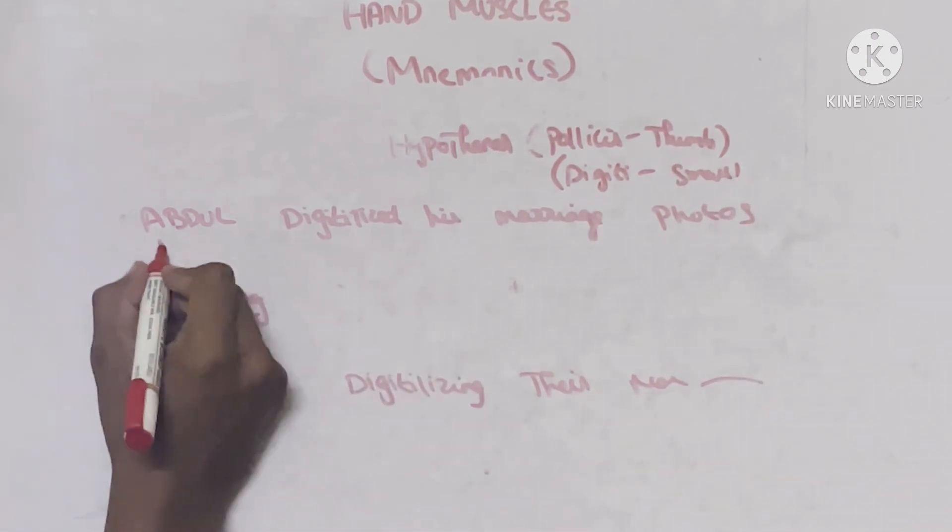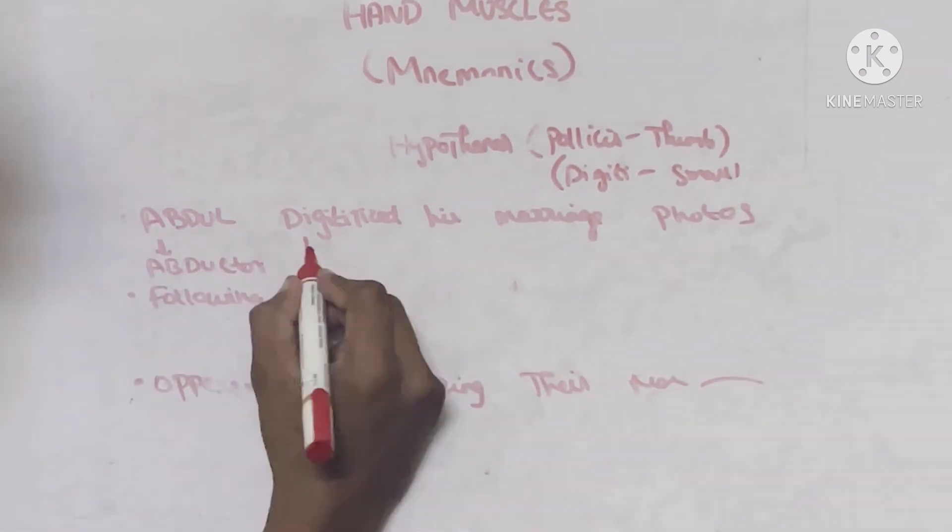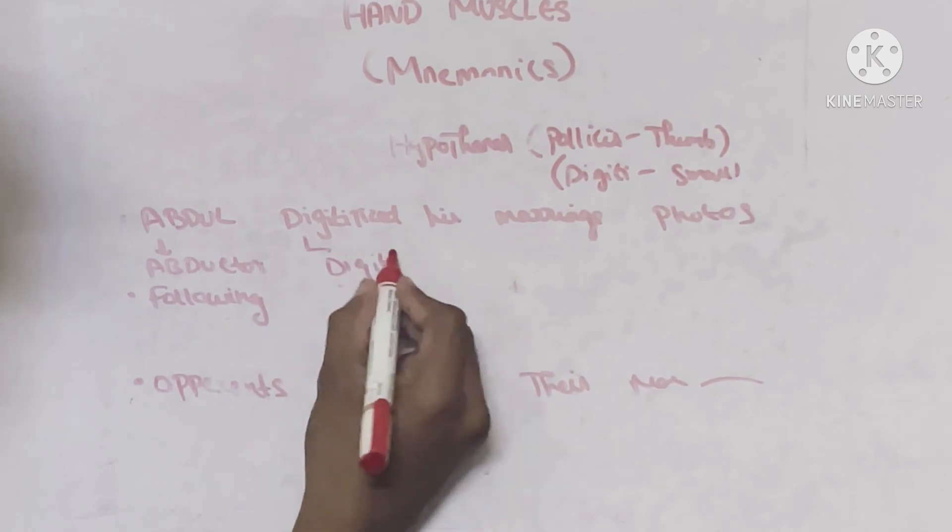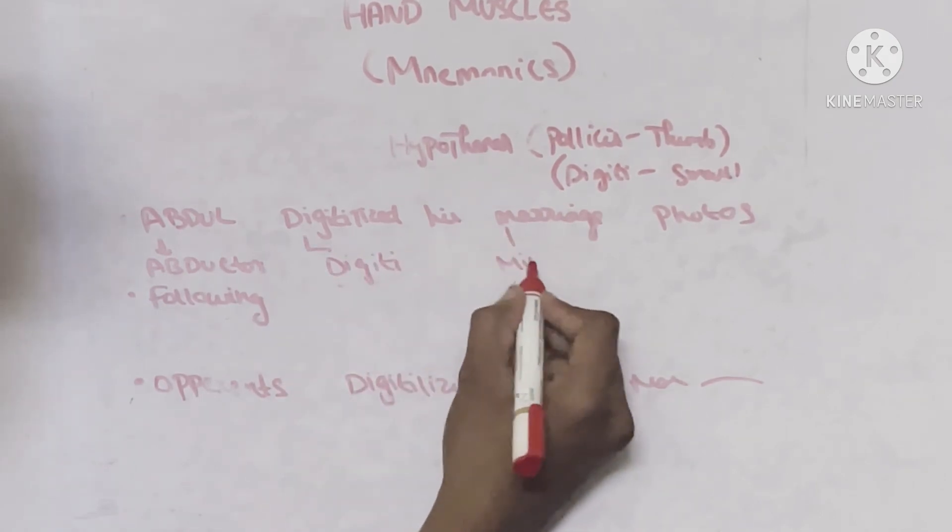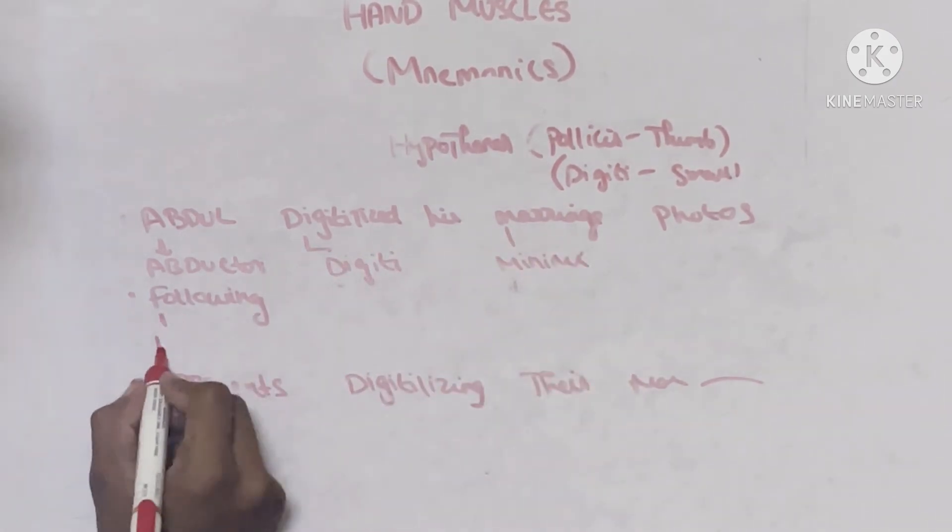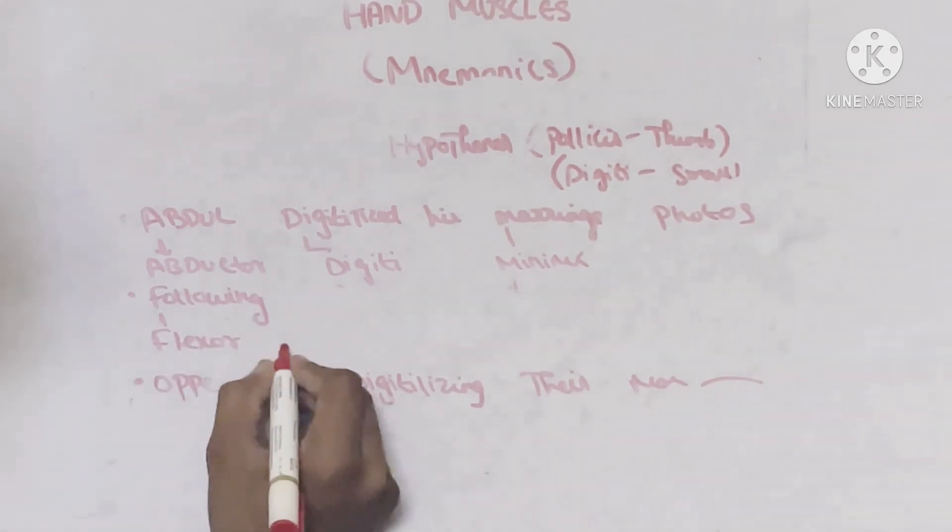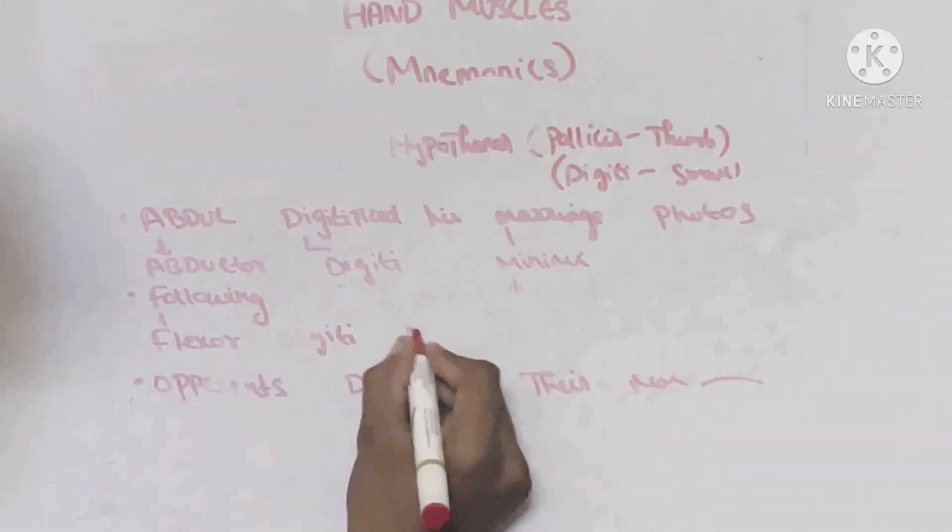That's it. Here first muscle: abductor, D stands for digiti, M stands for minimi. F flexor, digiti, minimi.